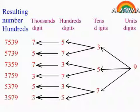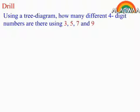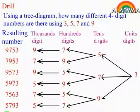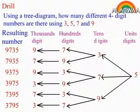1000s digit, 100s digit, 10s digit, units digit. Drill: Using a tree diagram, how many different 4-digit numbers are there using 3, 5, 7, and 9? Resulting numbers — 1000s digit, 100s digit, 10s digit, units digit.